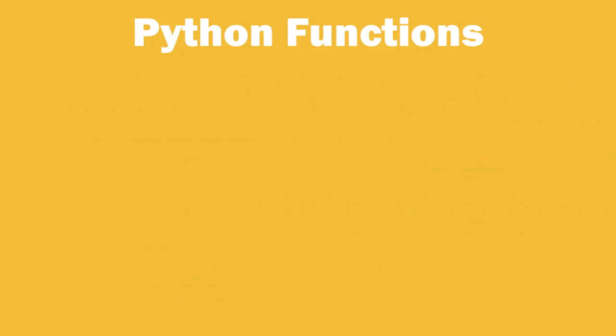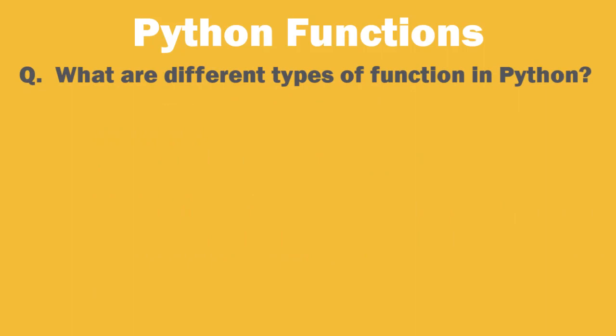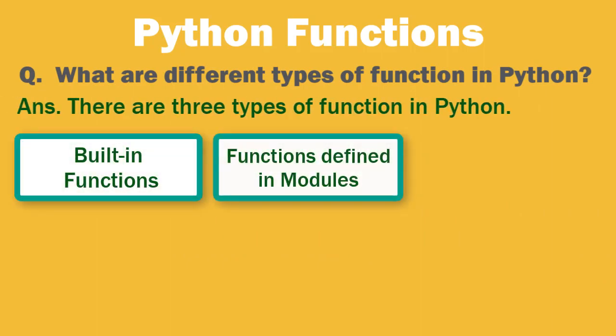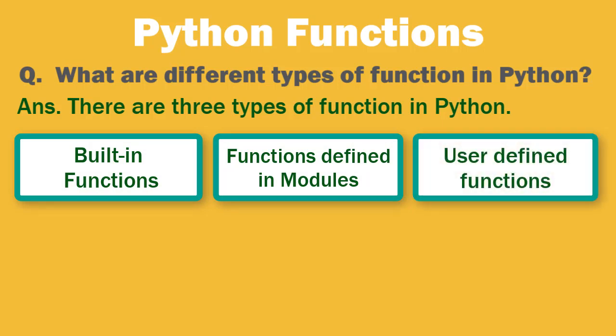So, what are different types of function in Python? There are three types of functions in Python: built-in functions, functions defined in modules, and user-defined functions.